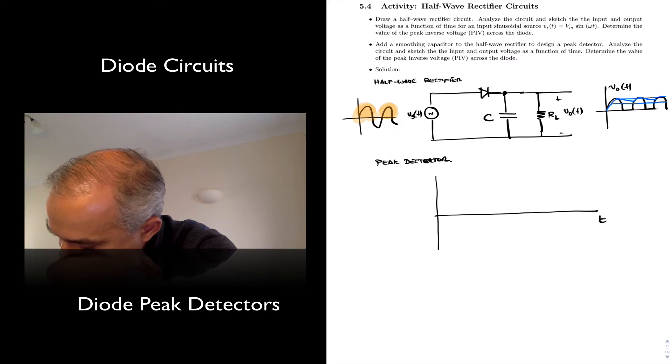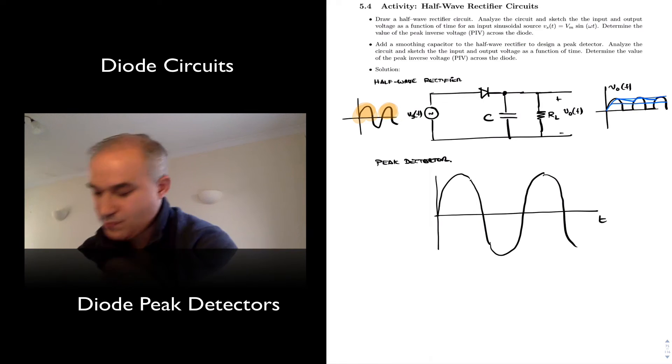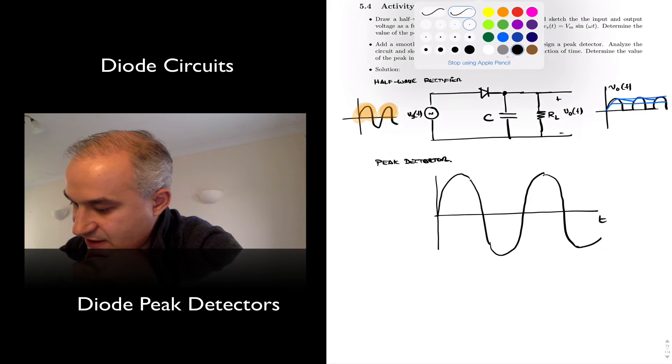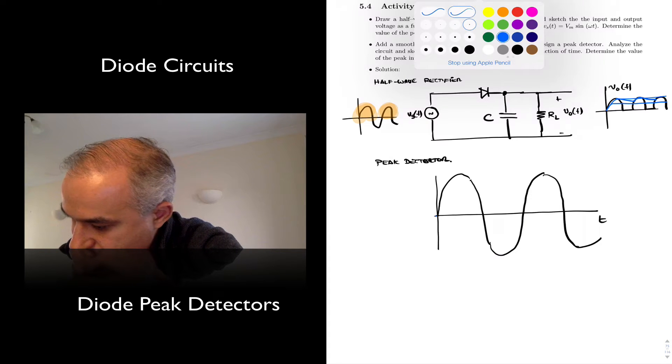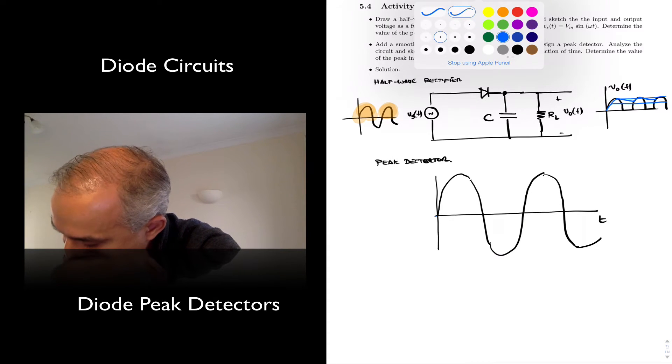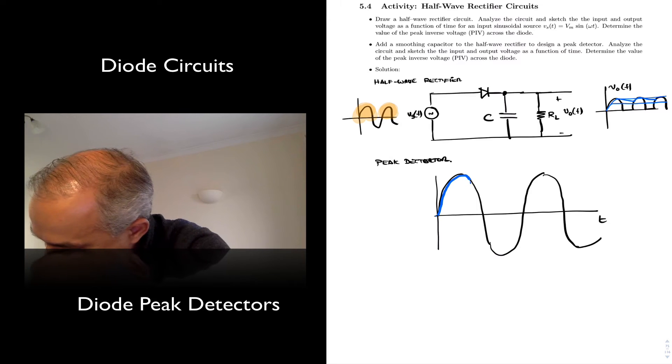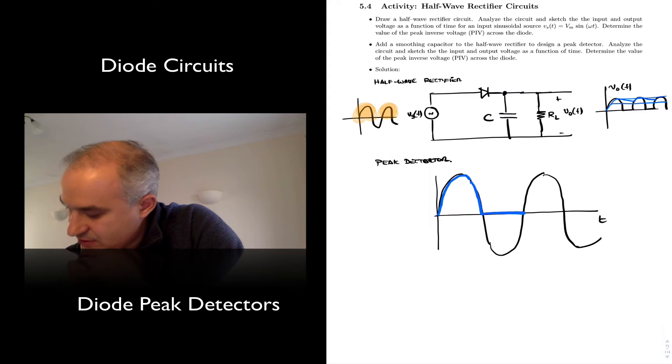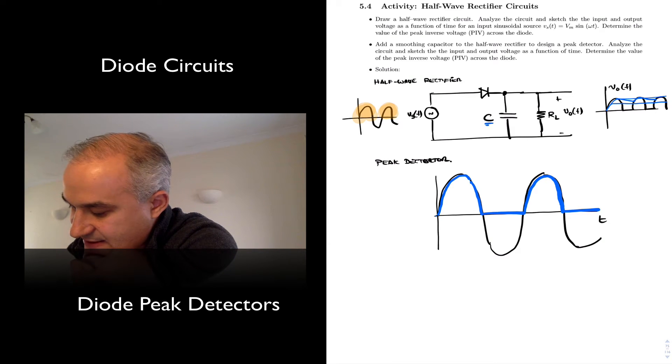So this is our input signal. Ideally, we have seen that if we had an ideal diode, we will get something like this, right? A short during the half-wave we are actually conducting. This will be a short. Then it is reverse biased. This is our output. If we add this capacitor, now what happens?